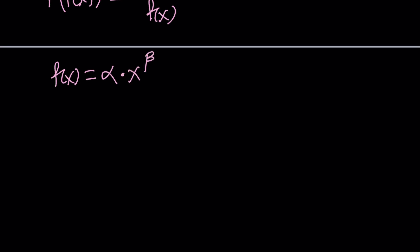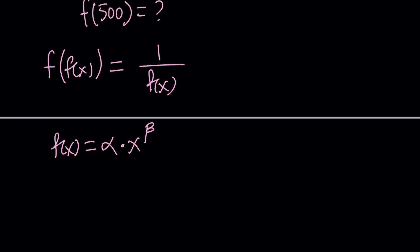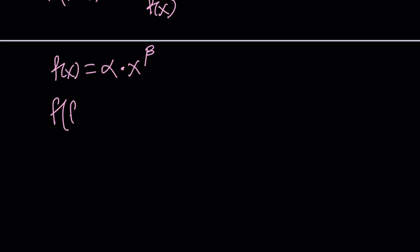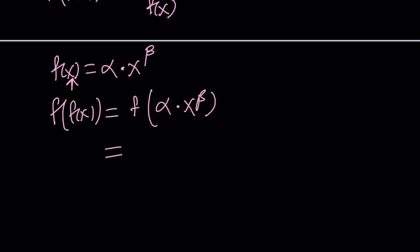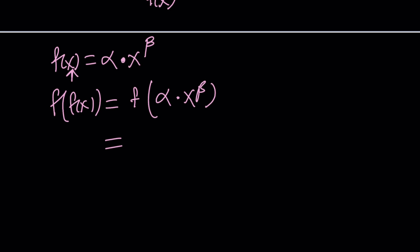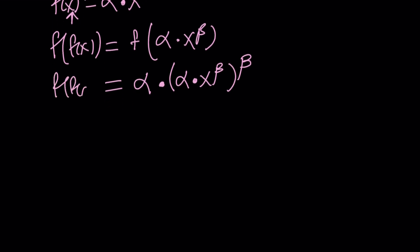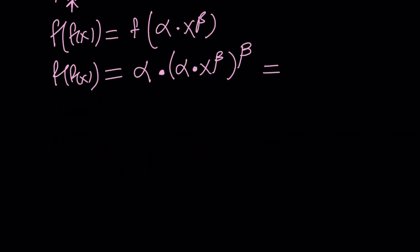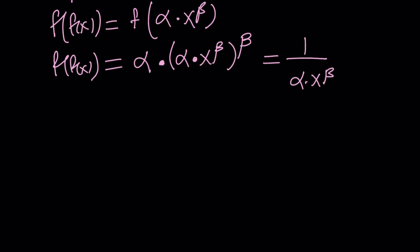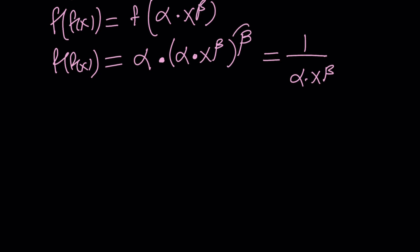With f(x) = α·x^β, we need more parameters to satisfy both conditions. So f(f(x)) is found by replacing x with f(x) = α·x^β. Applying f to that input, we raise it to the power β and multiply by α. So f(f(x)) = α · (α·x^β)^β = α^(1+β) · x^(β²). We want this to equal 1/f(x) = 1/(α·x^β) = α^(-1) · x^(-β). Comparing, we have α^(1+β) = α^(-1), so 1 + β = -1, giving β = -2.